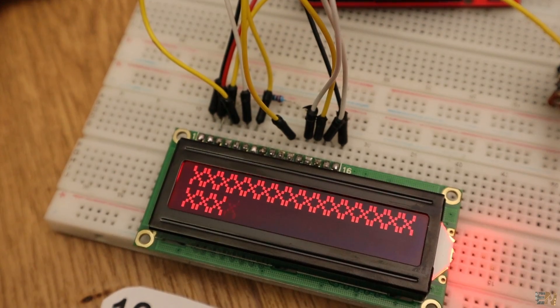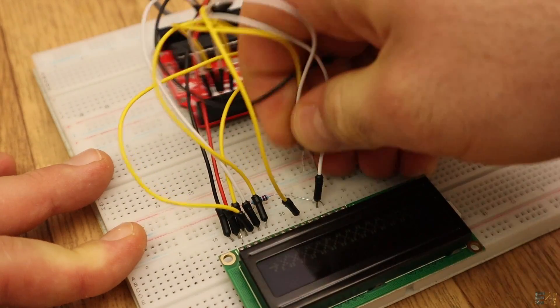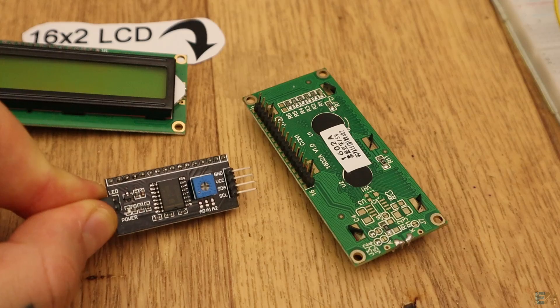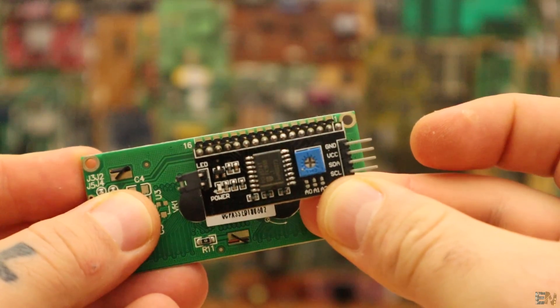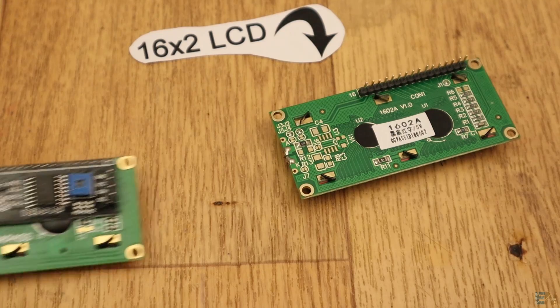The problem is that this setup uses a lot of pins, so most of the Arduino pins are used and we don't want that. The solution is to use this kind of serial module. This is an I2C module that only needs two connections, the data and clock and it will automatically create the parallel output for the LCD.